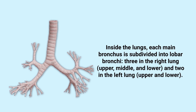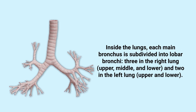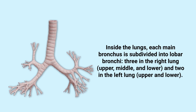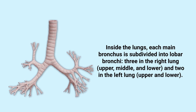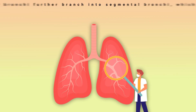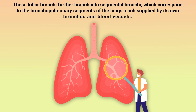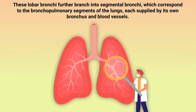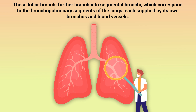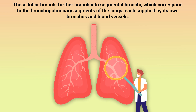Inside the lungs, each main bronchus is subdivided into lobar bronchi — three in the right lung (the upper, middle, and lower) and two in the left lung (the upper and lower). These lobar bronchi further branch into segmental bronchi, which correspond to the bronchopulmonary segments of the lungs, each supplied by its own bronchus and blood vessels.